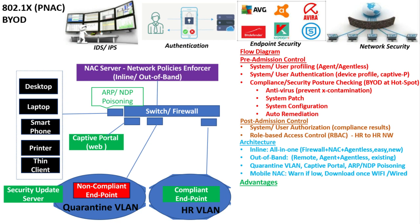There is also a concept of mobile network access control, which involves a trade-off between security and availability. If the network bandwidth is not sufficient to install security updates, the user is shown a warning if their device is non-compliant, but the security updates are not installed and the user is not quarantined. Instead, once the user connects over a higher-bandwidth medium such as Wi-Fi or wired, the necessary security updates are installed on the device.